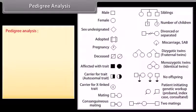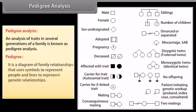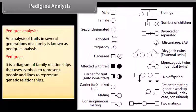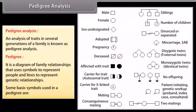Pedigree analysis. An analysis of traits in several generations of a family is known as pedigree analysis. A pedigree is a diagram of family relationships that uses symbols to represent people and lines to represent genetic relationships. Some basic symbols used in a pedigree are shown here.